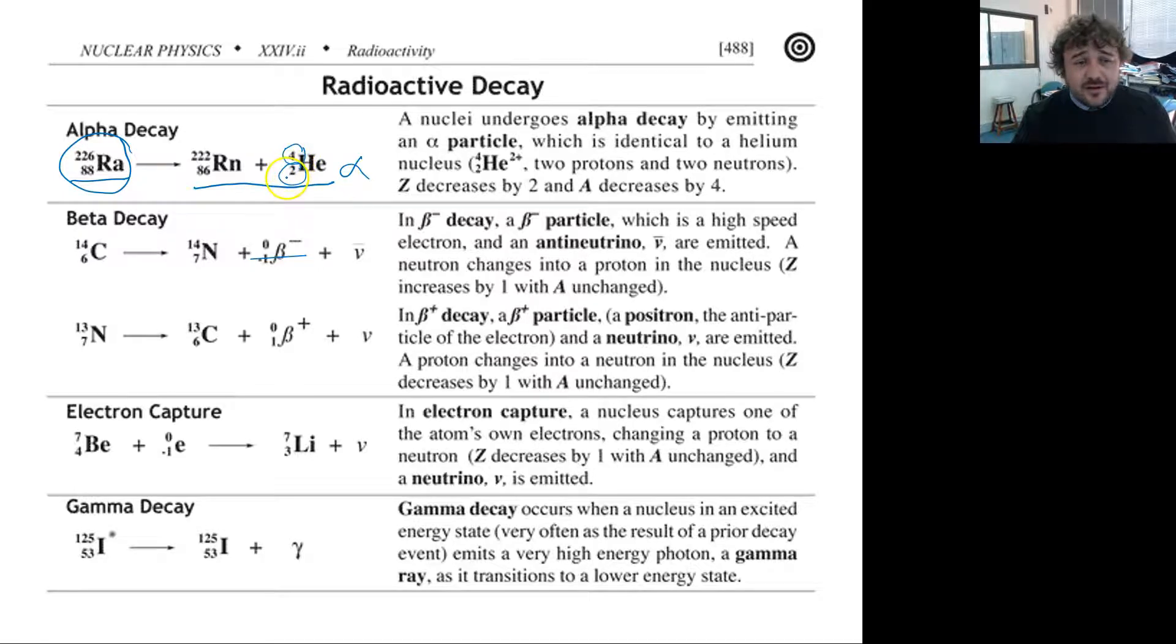It's identical to a helium nucleus which means it has two protons and two neutrons. The reason that's four is because this is its atomic number, this is its atomic mass. So two protons, two neutrons.